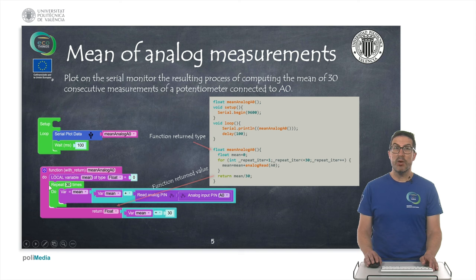So in this case we are computing the mean of 30 measurements. So we are accumulating the value here in the mean variable and in the end we divide it by the number of measurements we've done. So we have a mean and this is what we return.